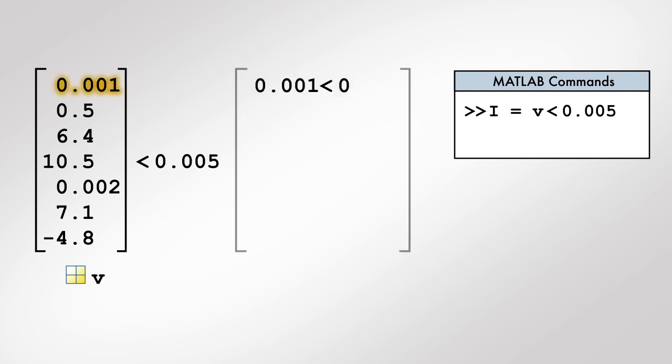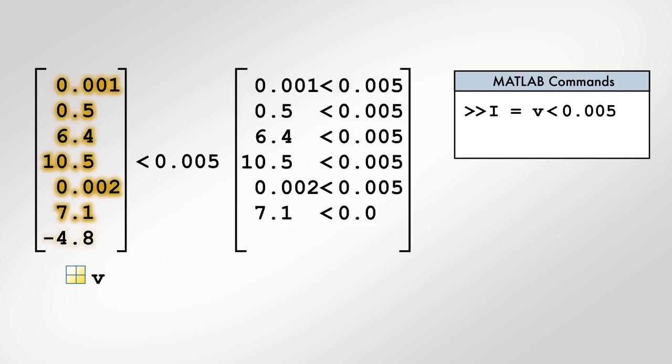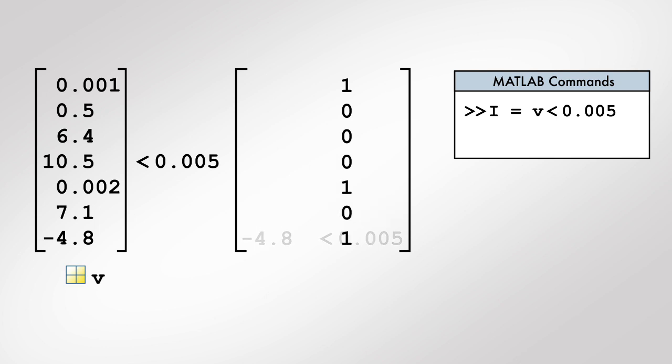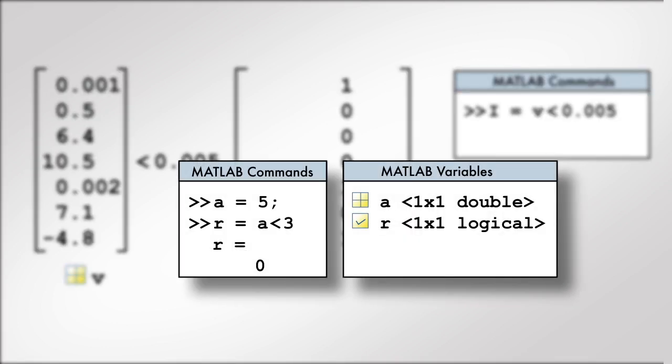This command compares each element of v with 0.005 and combines the result of every operation into an array of the same size as v. Recall that using a logical operator with two scalars results in a logical variable that has a value of either true or false.